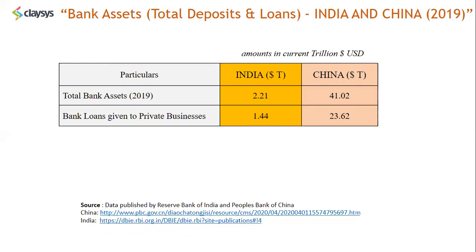The Indian GDP is about 2.8 trillion dollars, and the total loans given to private businesses in India is almost half our GDP — about 50 percent. In China, the total loans given to businesses is 23 trillion dollars, which is almost 175 percent of GDP. This data is from the Reserve Bank of India and the People's Bank of China, which can be reviewed.